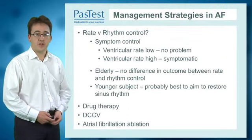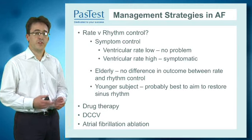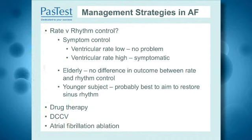Let's look at management strategies in atrial fibrillation, particularly rate versus rhythm control. Most symptoms in AF are governed by the ventricular response — how fast or slow the heart rate is at rest and during exertion. Current guidelines tell us that in younger subjects, it's best to try to restore sinus rhythm, whereas in elderly subjects there's little outcome difference between good rate control in AF versus restoring sinus rhythm.